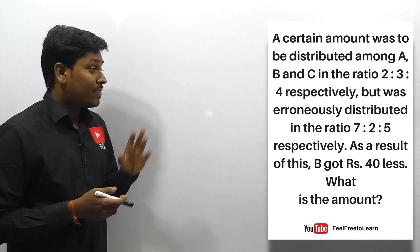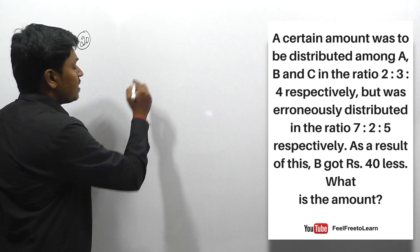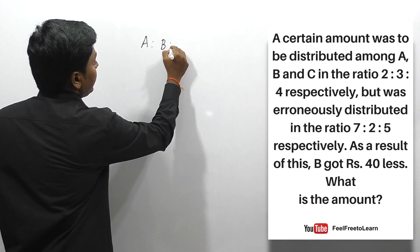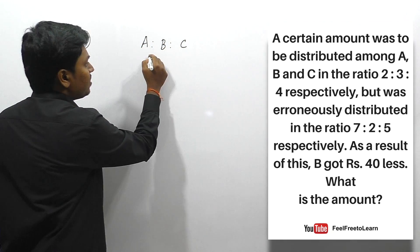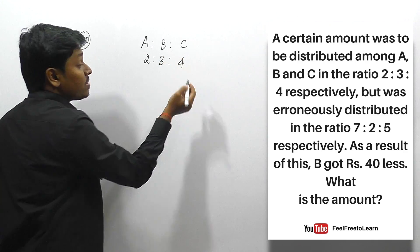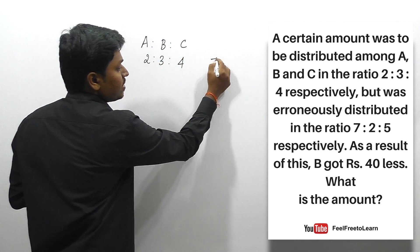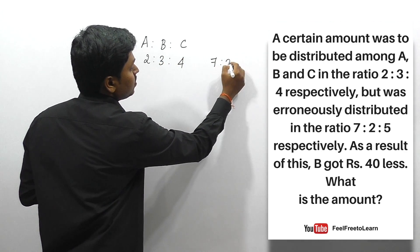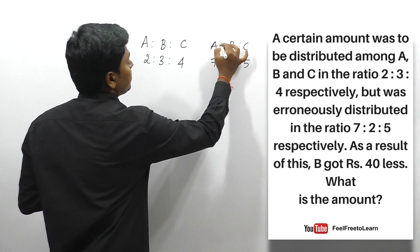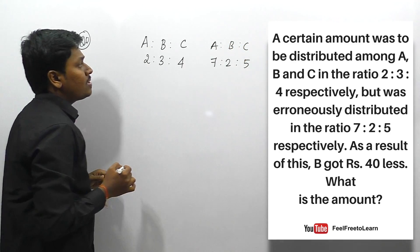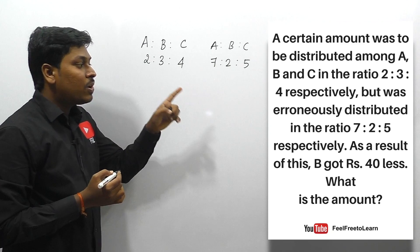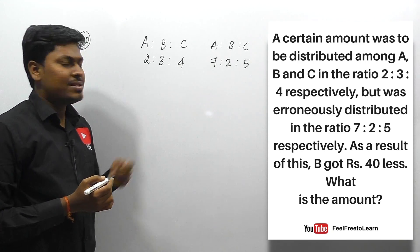The original distribution ratio for A, B, C is 2:3:4, and the wrong distribution ratio is 7:2:5. The original amount B should get represents 3 parts out of a total of 9 parts (2+3+4). Due to wrong distribution, B is getting 2 parts out of 14 parts (7+2+5). B got 40 rupees less than the original. The difference between the original and wrong amount for B equals 40 rupees.